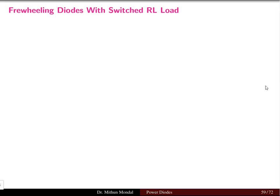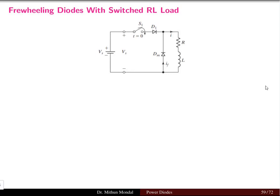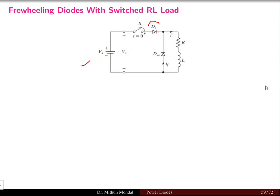We were discussing power diodes with different types of loads. We have already covered the diode-switched RL load, but now we will discuss the role of the freewheeling diode in the RL load. In this circuit we have a diode, and the load is an RL load — a combination of resistance and inductance. The source is a DC source connected via a switch, which is closed at time t equal to zero so that current flows in the network.